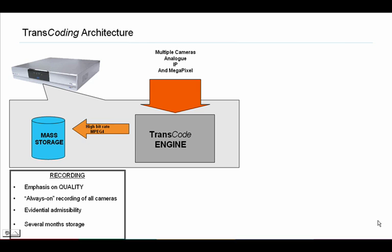For this application, the requirement demands that we take our multiple camera sources — be they analog, IP and megapixel — and record them alongside each other seamlessly. In this application, in high bitrate MPEG-4, but it could equally well be JPEG.